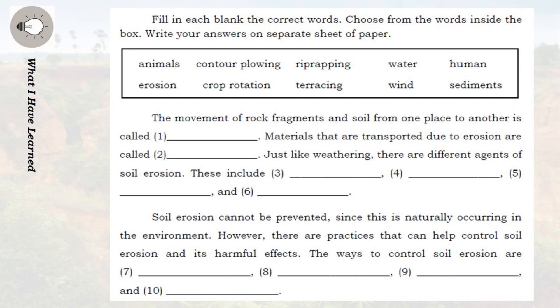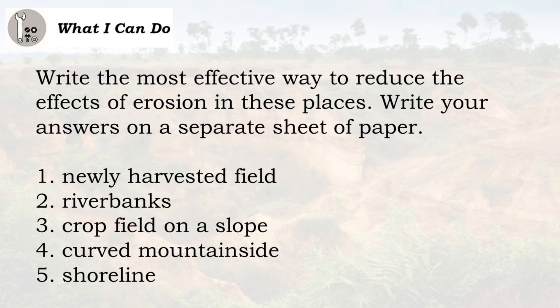Write the most effective way to reduce the effects of erosion in these places. Write your answers on a separate sheet of paper. 1. Newly harvested field. 2. Riverbanks. 3. Crop field on a slope. 4. Curved mountainside. 5. Shoreline.